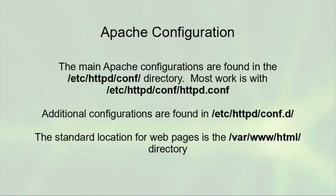The main Apache configuration files are found in the /etc/httpd/conf directory. You also have the /etc/httpd/conf.d directory, which has other configurations such as user directories and SSL configurations. The most common file you'll work with is /etc/httpd/conf/httpd.conf. This is the main file and contains a directive that loads all other files in the conf.d directory. In that file you can configure your Apache web server, tell it which ports are open, and enable or disable server-side includes and CGI.